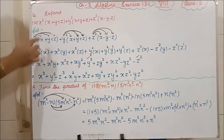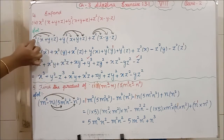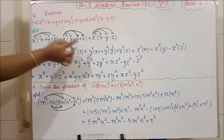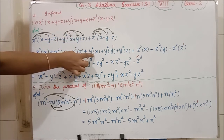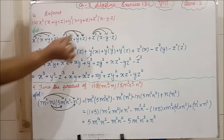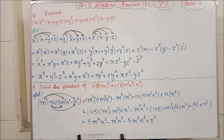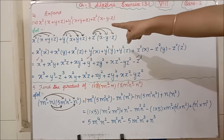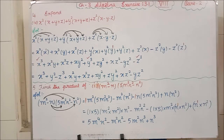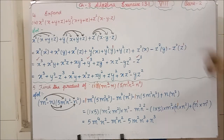Write it out: X²(X + Y + Z) gives X²·X + X²·Y + X²·Z. Then Y²(X + Y + Z) gives Y²·X + Y²·Y + Y²·Z. For Z²(X − Y − Z), note the minus signs: Z²·X − Z²·Y − Z²·Z, because plus × minus = minus.